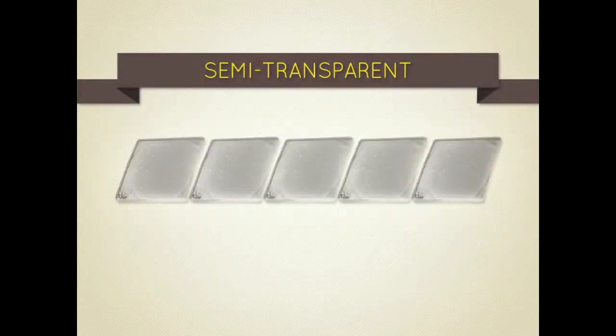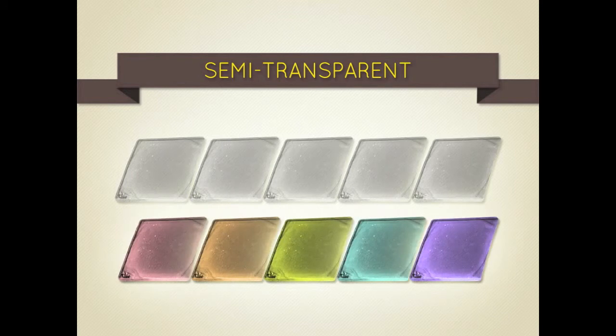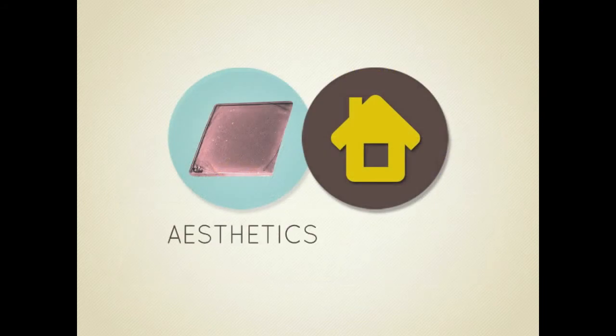DSCs have unique semi-transparent properties. Colors of dyes can be changed, allowing for different designs on the solar cells. This makes possible the seamless convergence of aesthetics and functionality like never before.